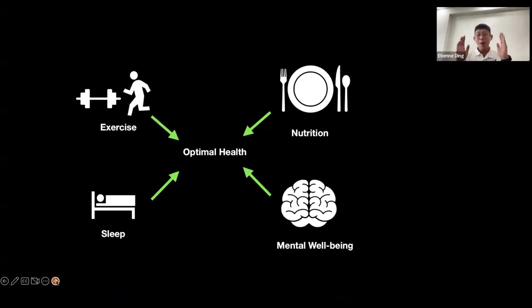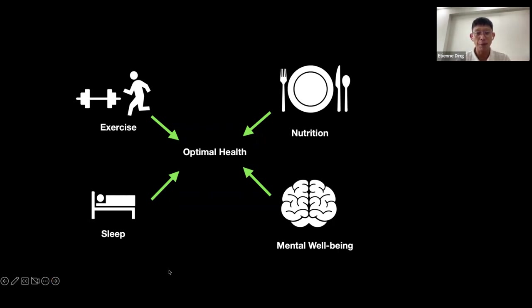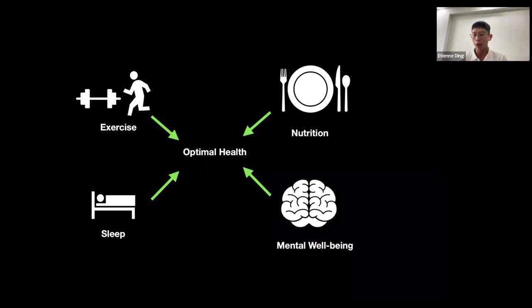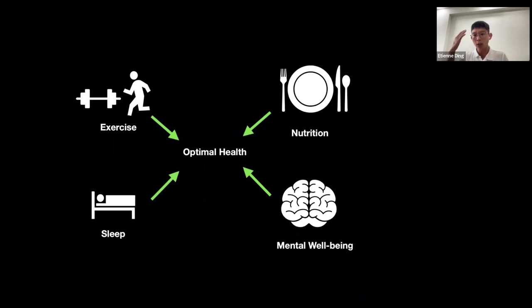I want to speak a bit more about what do we mean by health — what changes can you make to achieve optimal health? In sports science and exercise science, what we target to achieve optimal health includes good exercise, eating well, sleeping well — meaning sufficient sleep duration and good sleep quality — and of course mental wellbeing, how you manage stress. Today's biohacks will cover three parts: a hack for exercise, a hack for sleeping, and a hack for mental wellbeing.